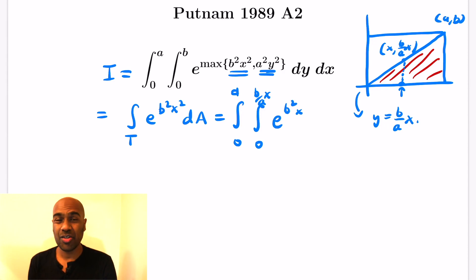So you get the integral from 0 to b over ax of e to the b squared x squared dy dx. And it's a good idea to do the dy integral first because you can't integrate e to the x squared by elementary means. Integrating with respect to y will give us a factor that allows us to do a substitution. So we get the integral from 0 to a of b over a e to the b squared x squared dx and then multiply by that x factor.